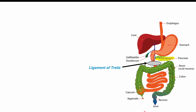The ligament of Treitz, found around the duodenum, is used as a cutoff point: anything above it is an upper GI bleed, anything below is a lower GI bleed. So a bleed from an angiodysplasia in the cecum — the most common location — is a lower GI bleed, while angiodysplasia in the stomach would be an upper GI bleed.